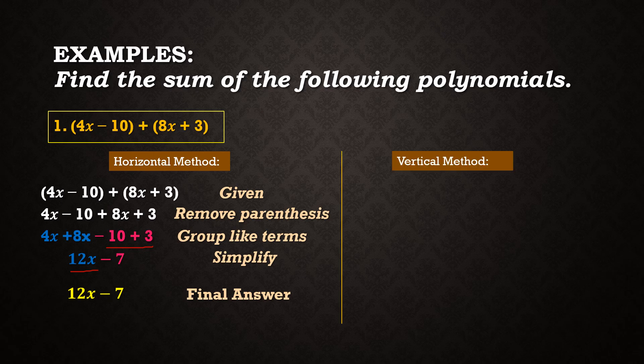The second method we can use is the vertical method. For this method, we just have to align the similar terms. As you can see, 4x and 8x are aligned, and the constants negative 10 and positive 3 are also aligned. Now we start by adding 4x plus 8x, which is equal to 12x. And negative 10 plus 3 is equal to negative 7. We came up with the same answer, which is 12x minus 7.